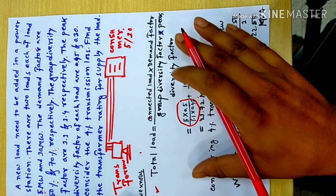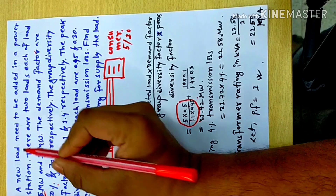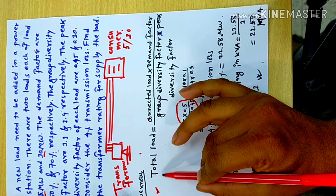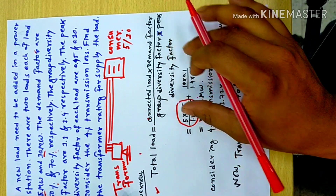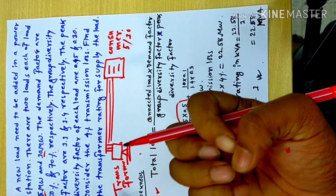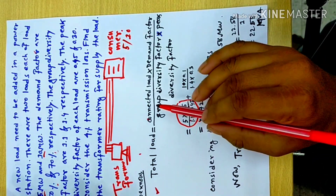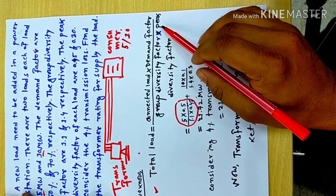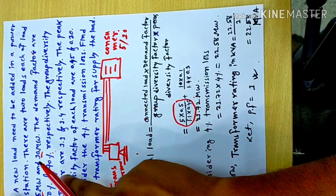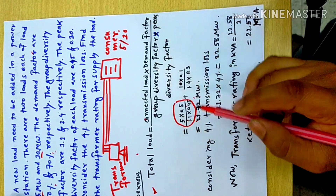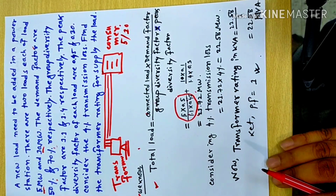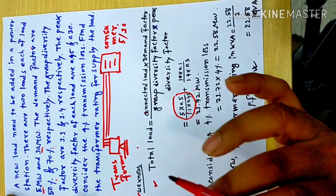We will do that. This is the formula for this loss. The loss is 10. This is a connected load. The factor multiplication is the new load and total load. The total load has two related connected loads. I have written the new load by existing load: connected load into demand factor, group diversity factor, multiplication, big diversity factor. In this way, the total load accounts for the 4% transmission loss.